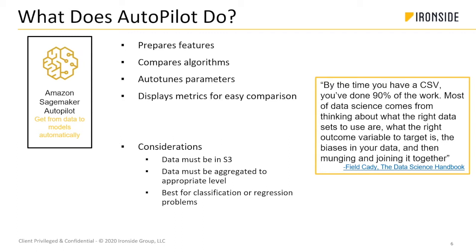I was glad to see this quote from Field Cady, the author of the Data Science Handbook: 'By the time you have a CSV — your flat file for training — you've done 90% of the work.' Most of data science comes from thinking about the right datasets, the right outcome variable, the biases in your data, and then munging and joining them together. Auto ML isn't doing 90% of the work — it's actually the reverse. You've got to do all that upfront critical thinking work, and then it automates the manual steps a data scientist would go through.